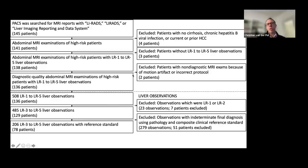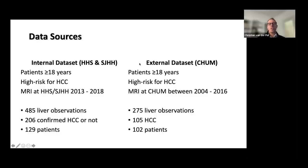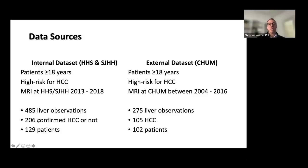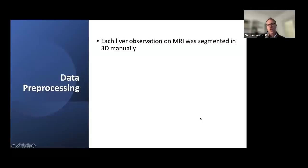Our data sources included an internal dataset from Hamilton Health Sciences and St. Joe's, and an external dataset from the University of Montreal. We required adult patients over 18 at high risk for HCC. Our internal cohort spanned 2013–2018; Montreal's 2004–2016. Ultimately we had 485 liver observations from 129 patients internally, with 206 observations confirmed as HCC or not. The external dataset had 275 liver observations from 102 patients, of which 105 were HCC.